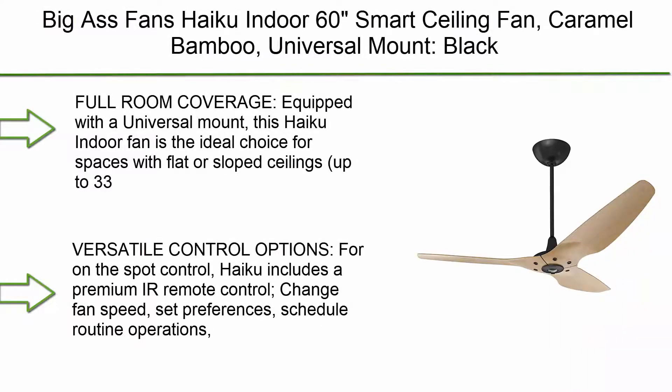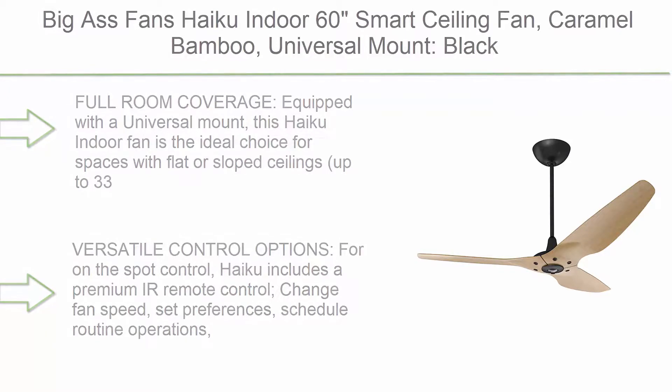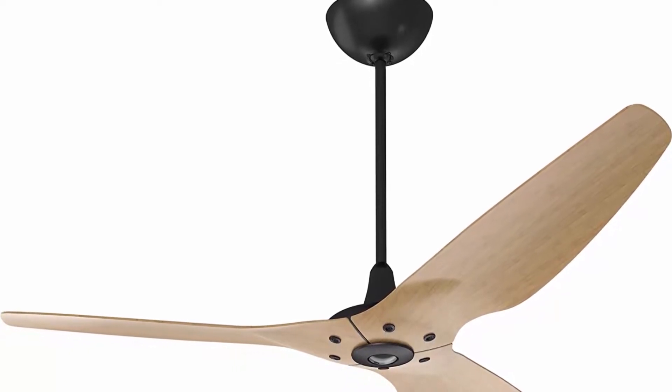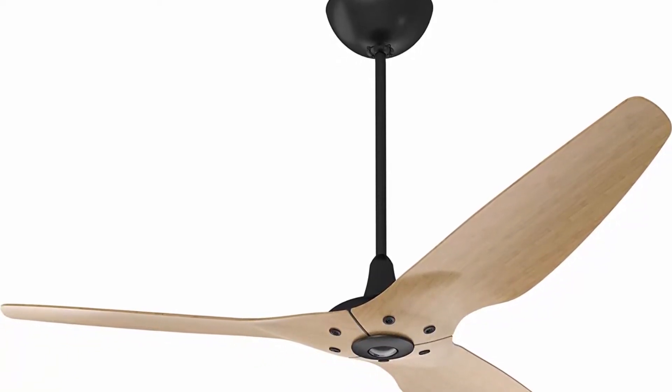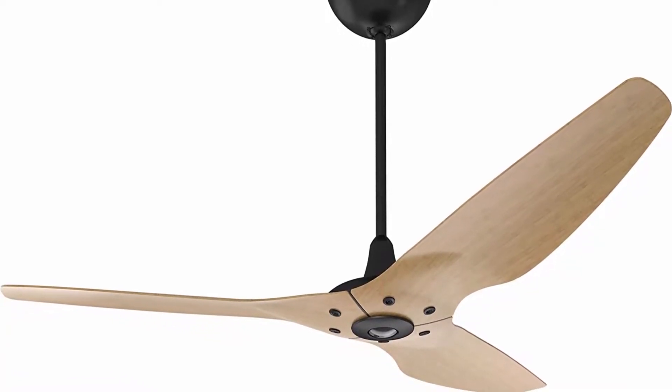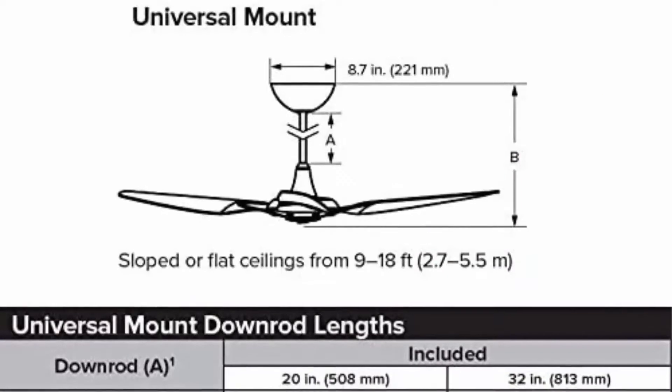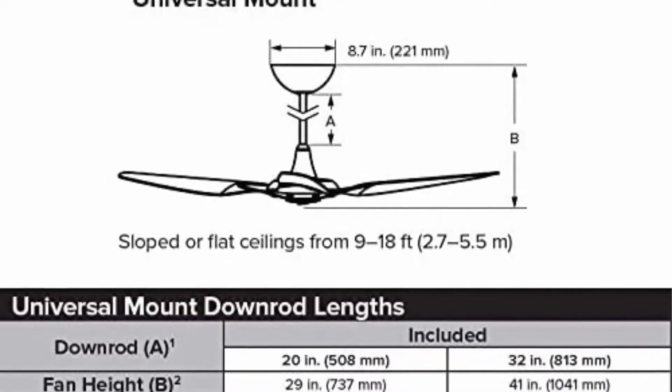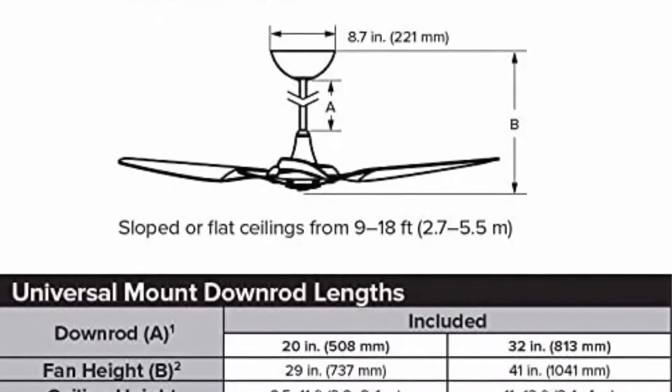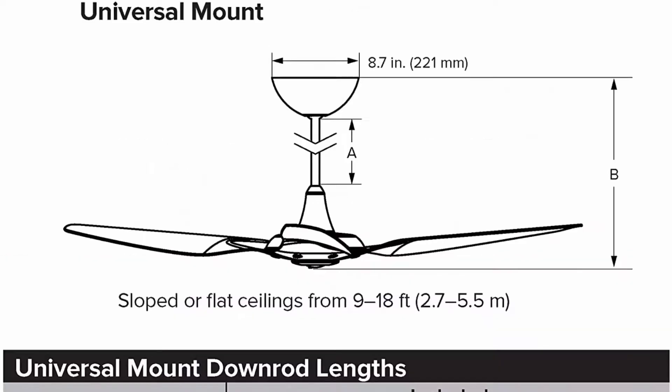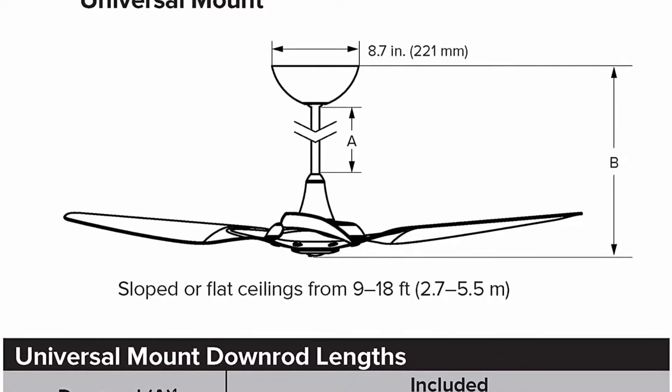Top 1. Big Ass Fans Haiku Indoor 60 smart ceiling fan, caramel bamboo, universal mount, black, SenseMe and Haiku app, premium remote control, Alexa, Google and ecobee compatible. Full room coverage. Equipped with universal mount, this Haiku Indoor fan is the ideal choice for spaces with flat or sloped ceilings up to 33 degrees. 60 inch blade diameter can move enough air to keep rooms up to 20 feet by 20 feet comfortable all year long. Includes 20 inch and 32 inch extensions suitable for ceilings 10.5 feet to 14 feet high.